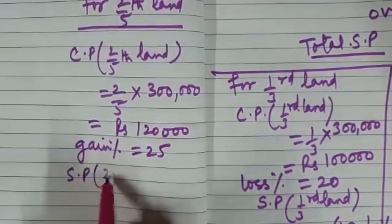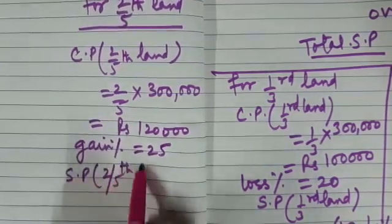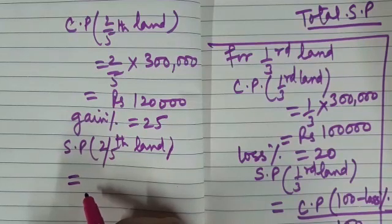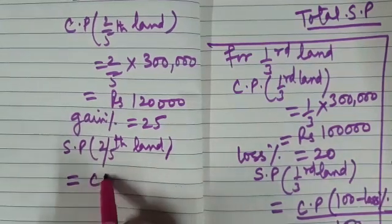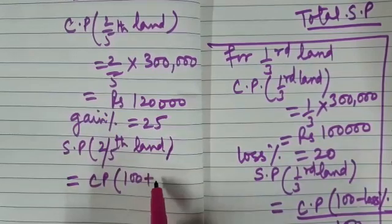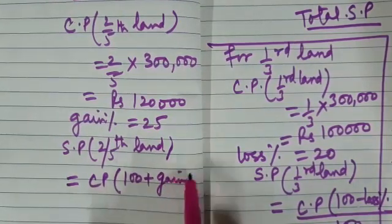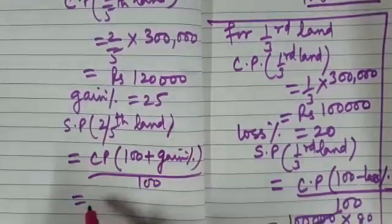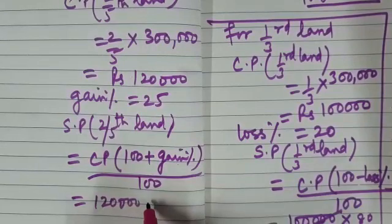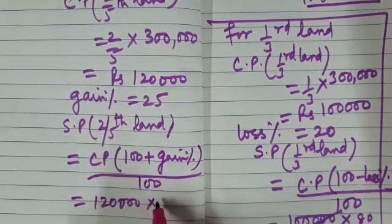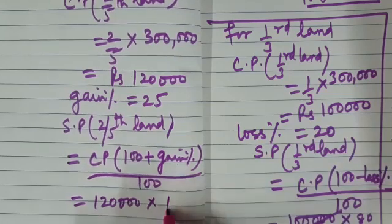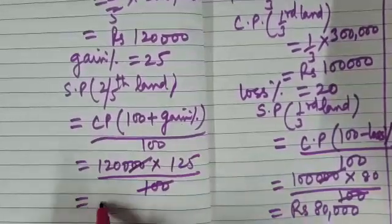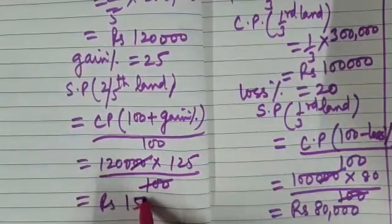Gain percent is given to be 25 for two-fifth of the land. What will be the selling price of two-fifth of the land? This will be equal to CP into 100 plus gain percent or profit percent divided by 100. Simplify, 1,20,000 into 100 plus 25 that is 125 upon 100. When you multiply, you get this as rupees 1,50,000.